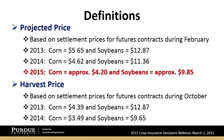Looking at 2015, the projected price is probably going to be approximately $4.15 to $4.20 for corn, and approximately $9.95 for soybeans. The point is that your revenue guarantees are going to be substantially lower in 2015 compared to 2014 and 2013, and particularly compared to 2011 and 2012. The revenue guarantee is going down quite a bit — and that's one of the reasons we wanted to do this webinar.